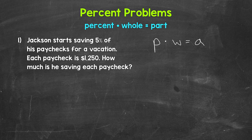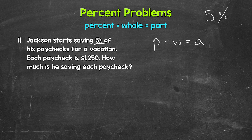Let's start with the percent. Jackson starts saving 5% of his paychecks for a vacation, so our percent is 5%. When we plug in the percent to the equation, we're going to use the decimal form — that makes the percent easier to work with. All we need to do to convert a percent to a decimal is divide by 100, which we can do quickly by moving the decimal twice to the left. For 5%, we move the decimal twice to the left and fill the gap with a zero, giving us 0.05, five hundredths.